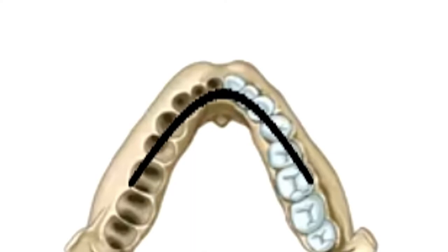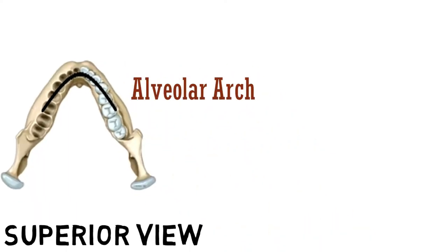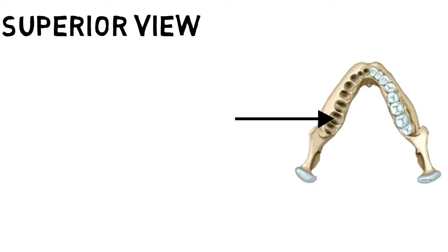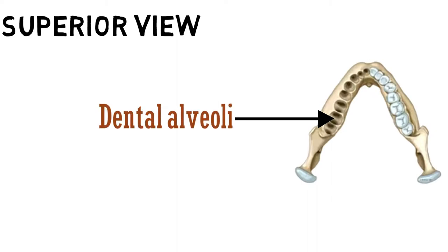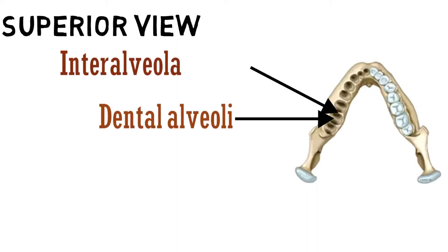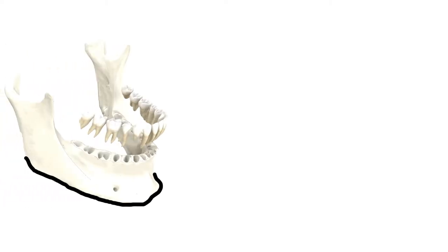Let's have a look. This is the superior view of the bone, and this arc is the alveolar arc. These sockets which you can see are the dental alveoli, and they are separated by these inter-alveolar septa. This outlined region is the base of the mandible.